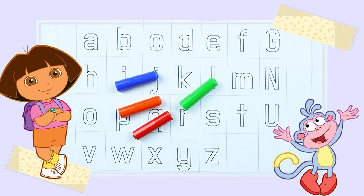Hello friends, today we learn small alphabet A to Z. A, B, C, D, E, F, G, H, I, J, K, L, M, N, O, P, Q, R, S, T, U, V, W, X, Y, and Z with some colors.